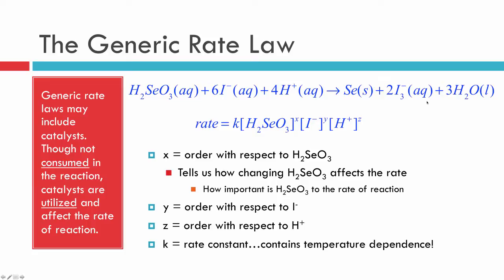When we have a reaction such as the one we see here, we can immediately write down a generic rate law. It's going to include the rate — that's the rate of the reaction — equals the rate constant times each of the reactants raised to some arbitrary constant x, y, or z. If we have a catalyst involved, we can include it in the rate law as well.